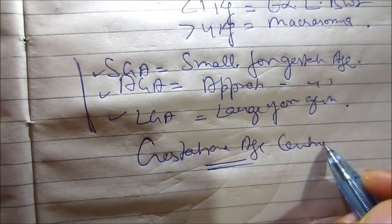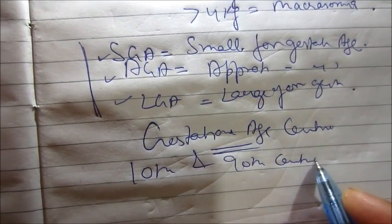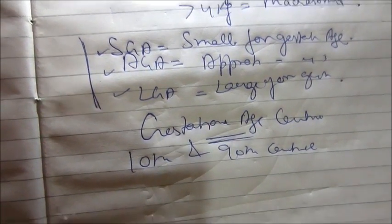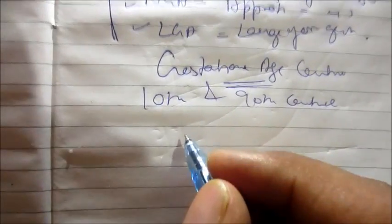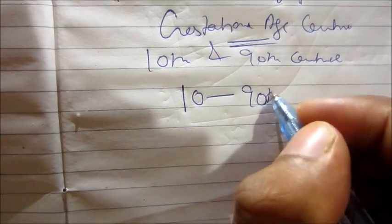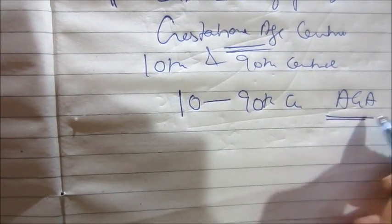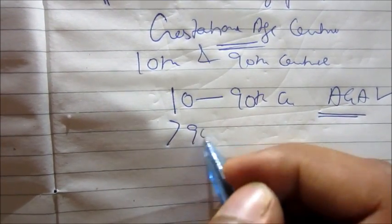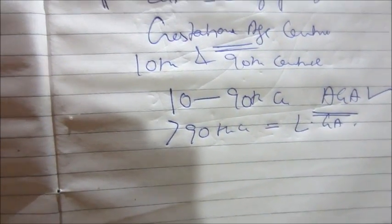In order to classify the child into SGA, AGA, or LGA, you should know the centile for that particular gestational age — specifically the 10th centile and the 90th centile. The chart is given in the books. If the weight of the baby falls between the 10th and 90th centile, the child is AGA. If the weight is greater than the 90th centile, the baby is LGA, and if it is less than the 10th centile, it is SGA.